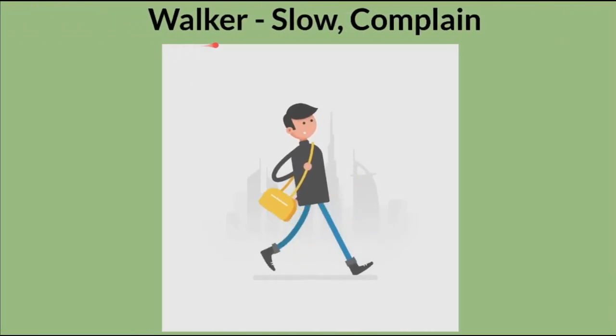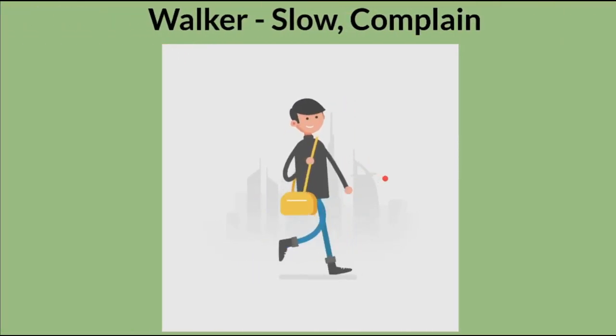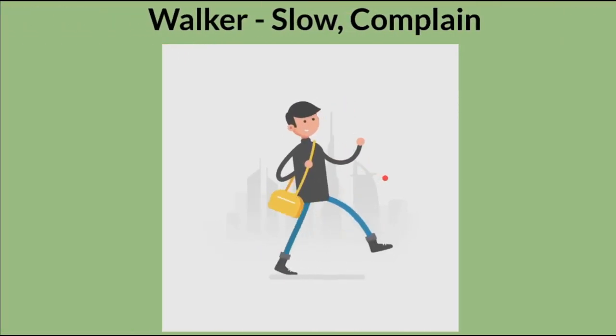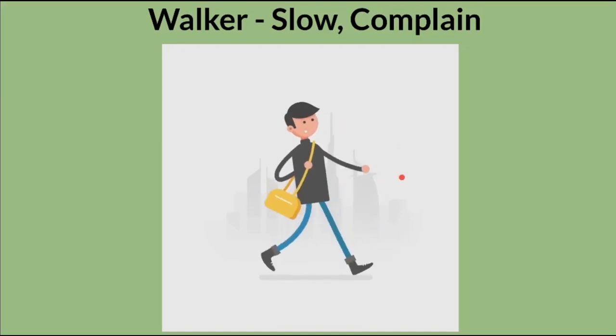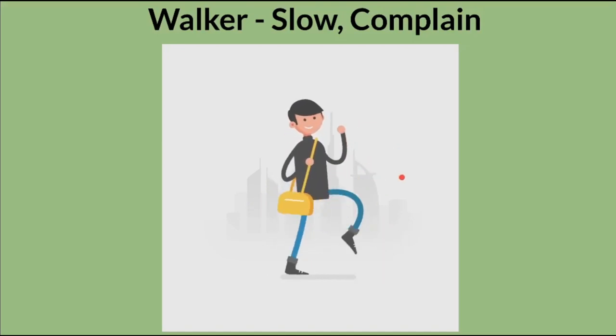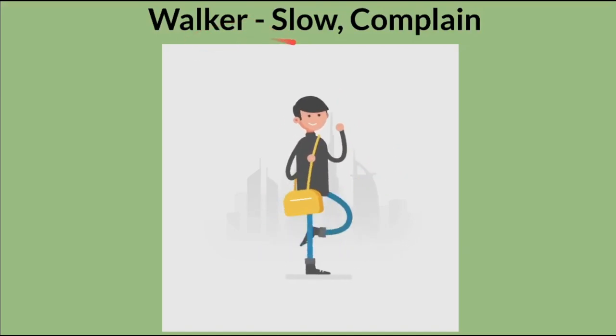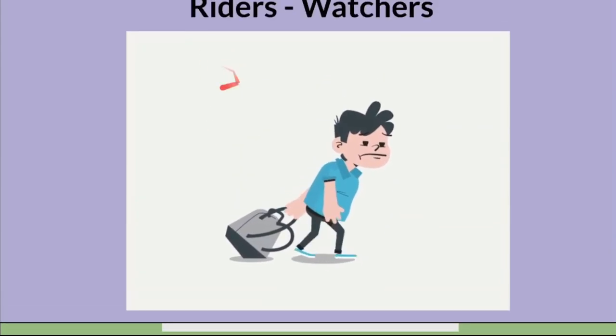The next type of team member is the walker. They perform tasks slowly, and they often complain and spread negativity within the organization. So these are the walkers.